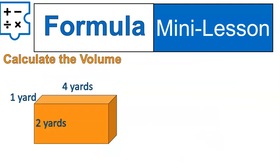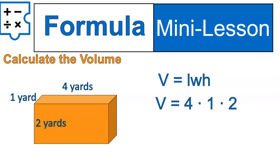Now let's use the formula. Calculate the volume of this rectangular prism using the formula: volume equals length times width times height. I wrote 4 times 1 times 2 — length, width, and height. If you change the order of the numbers it won't matter; you will still get the answer of 8. 4 times 1 is 4, times 2 is 8. That's how you calculate volume.